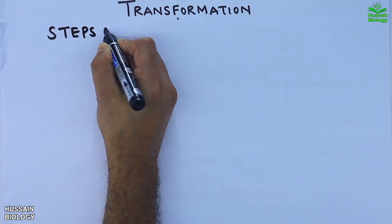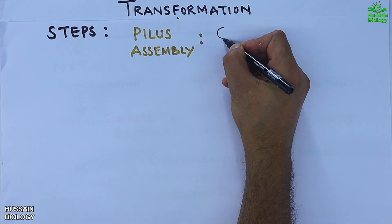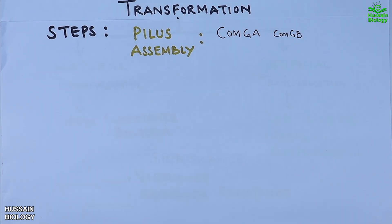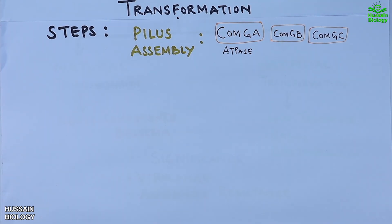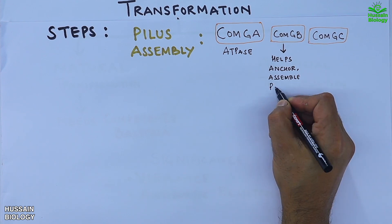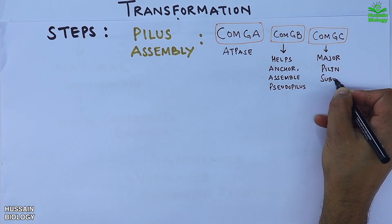Before getting into the mechanism, let's see the steps. First is pilus assembly, mediated by ComGA, ComGB, and ComGC proteins. ComGA is an ATPase that provides energy. ComGB proteins help in anchoring and assembling the pilus, and ComGC is a major pilin protein.